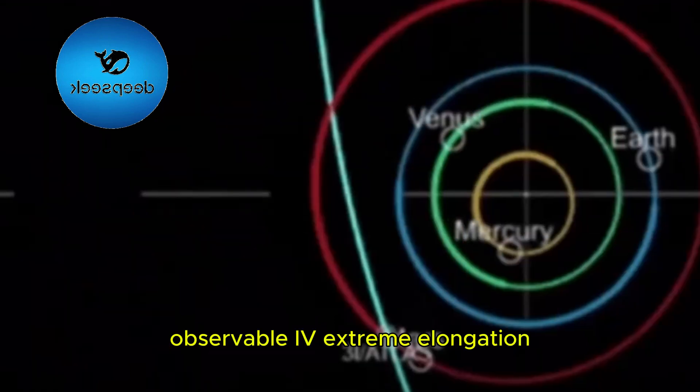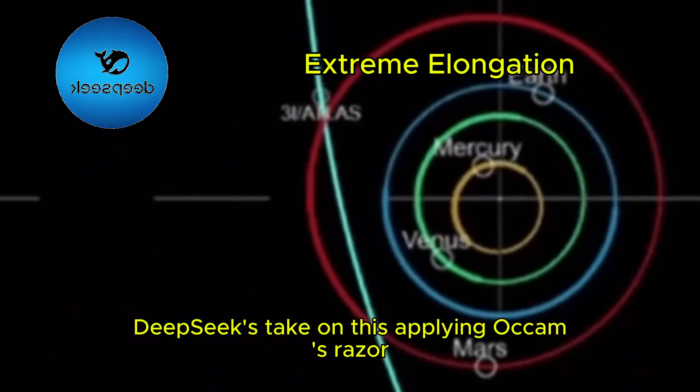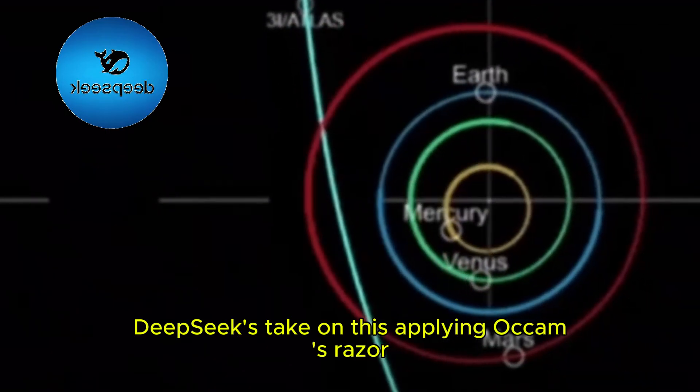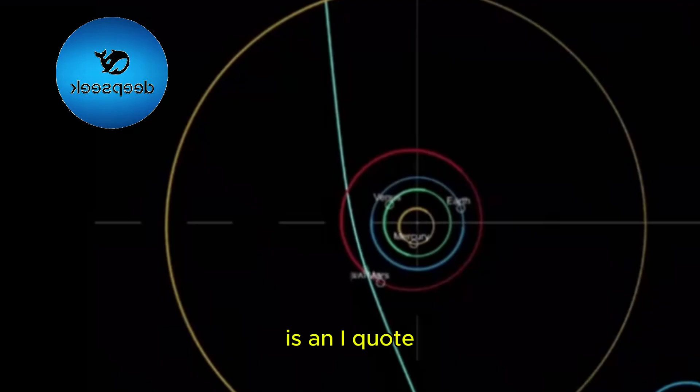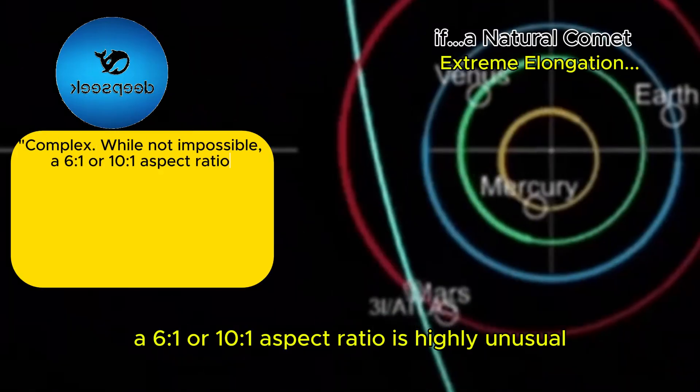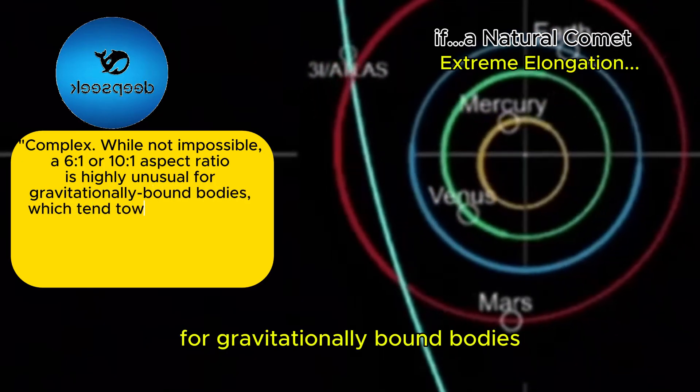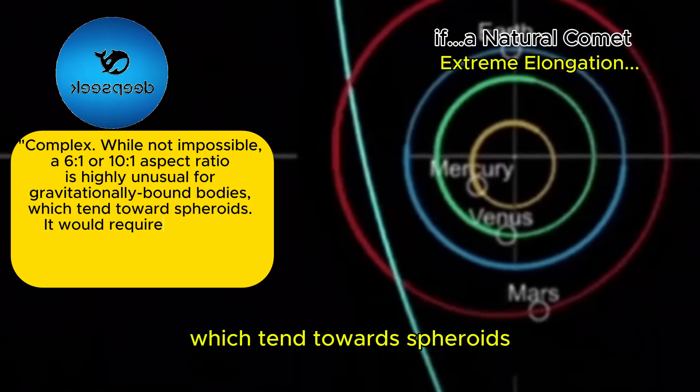Observable 4: Extreme Elongation. DeepSeek's take on this, applying Occam's razor under the natural comet hypothesis is, quote, complex. While not impossible, a 6 to 1 or 10 to 1 aspect ratio is highly unusual for gravitationally bound bodies, which tend toward spheroids.